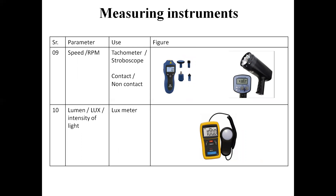In many industries we need to measure speed or velocity. A tachometer is a contact-type instrument that can be placed directly on the running system to measure RPM. A stroboscope is a non-contact type instrument also used to measure speed or RPM.